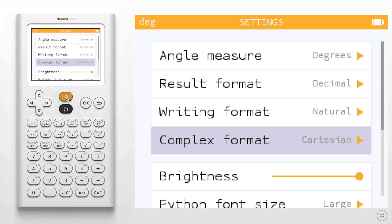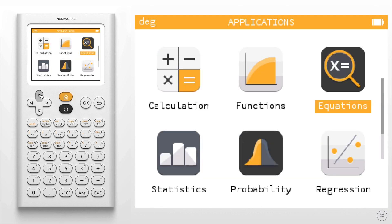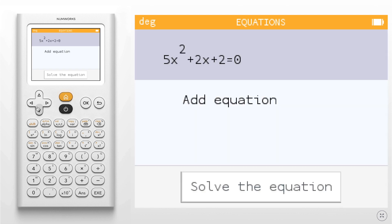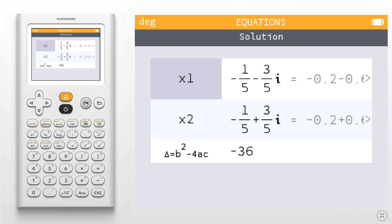Then we're going to return home, go up to the equations application once again, hit ok. Go down to solve the equation, hit ok. And here you'll see that we now have our solutions for our complex numbers.